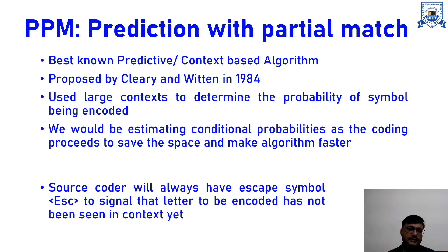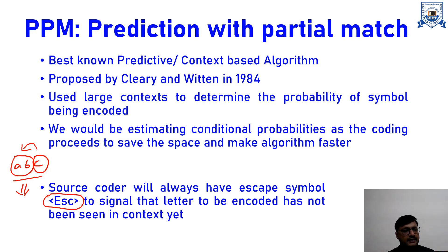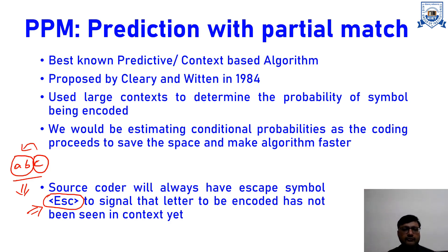One important thing to remember is that we use a special symbol called the escape symbol. If we are looking for a context — say we have A, B, C — the second order context for C is A and B, and the first order context for C is B. If, in what we have previously encoded, the second order context A, B for C has not occurred, then we encode the escape symbol. The escape symbol is an indicator that whatever context we were looking for was not available.